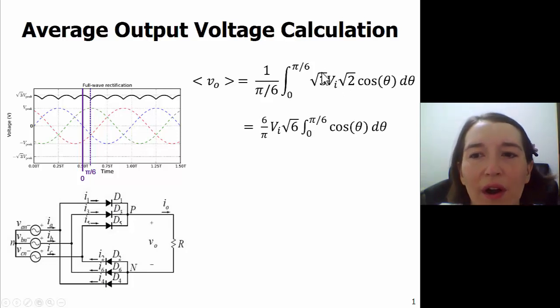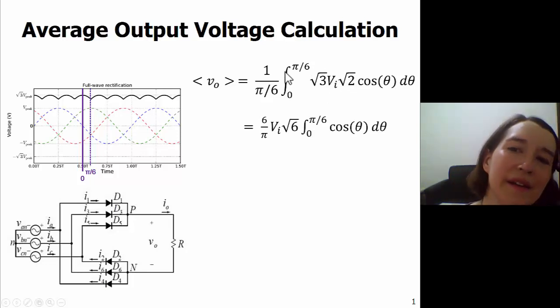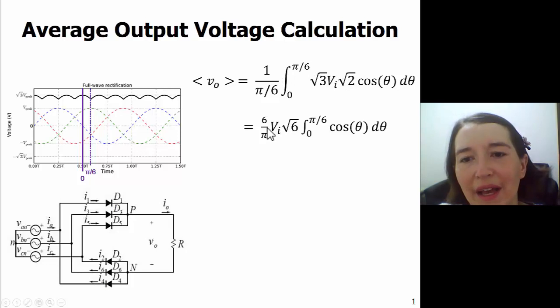Next we can move our constants outside of the integral and flip our ratio around here and combine some different terms, and we'll get this expression: constants at the front, and then we're just integrating from zero to π over 6 with a cosine value.